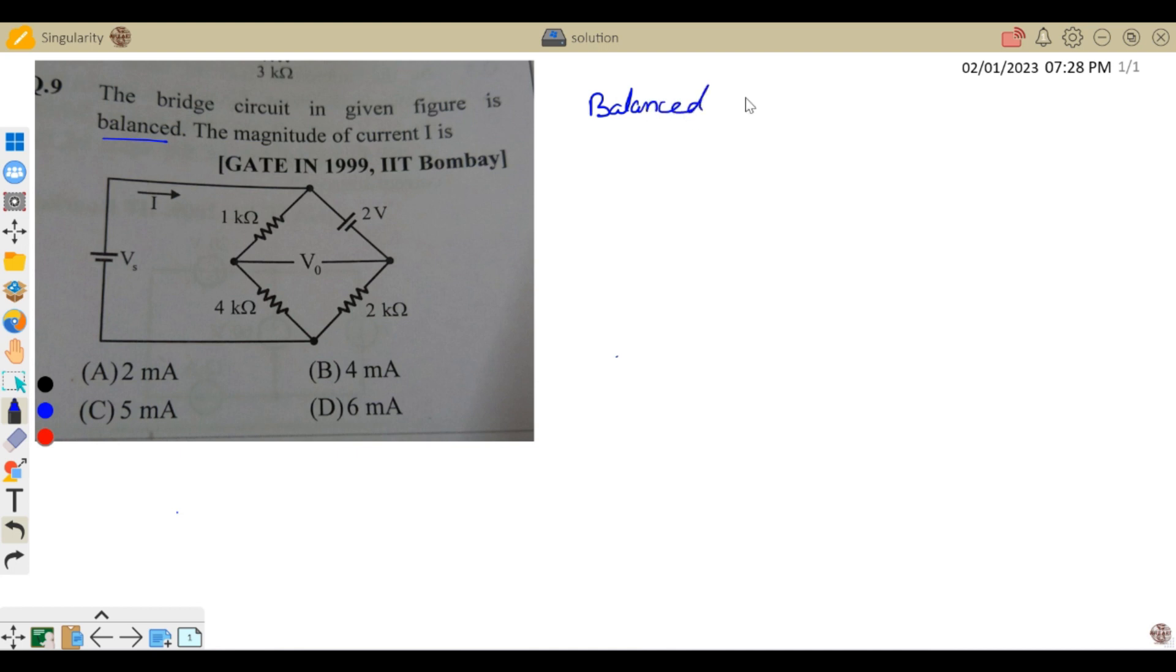So what happens? For a balanced bridge, 1 kΩ times 1 kΩ should be equals to 4 kΩ into the equivalent impedance here at this position.